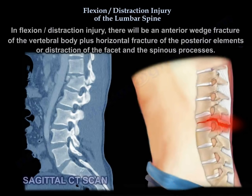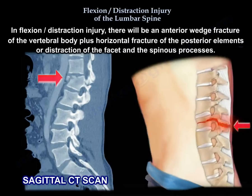In a Flexion Distraction Injury, there will be an anterior wedge fracture of the vertebral body plus a horizontal fracture of the posterior elements, or distraction of the facet and the spinous processes.